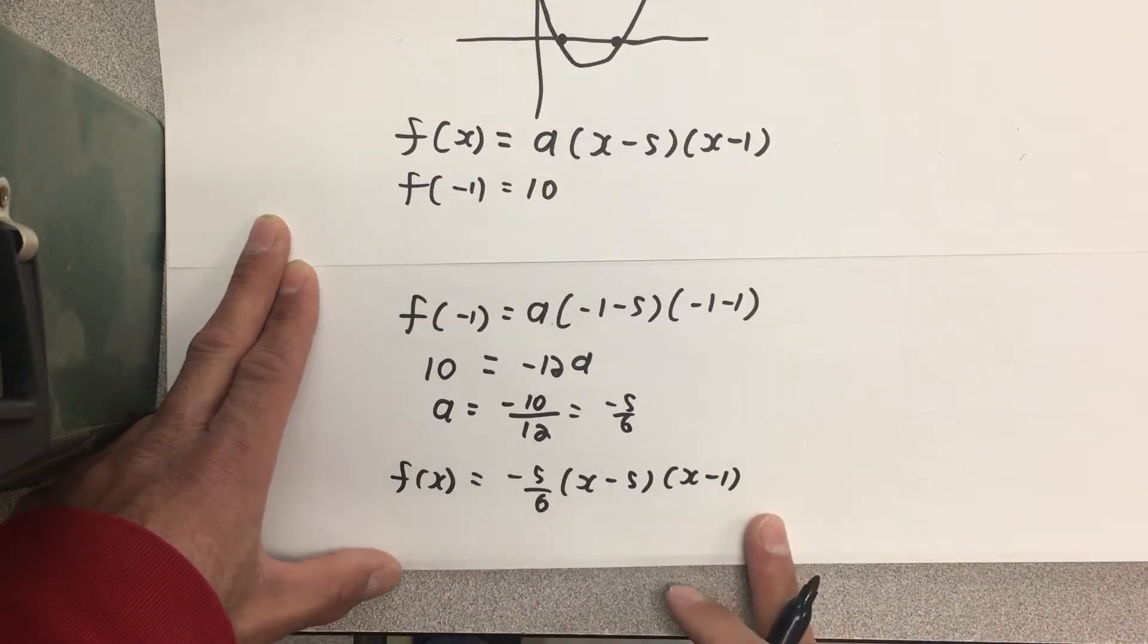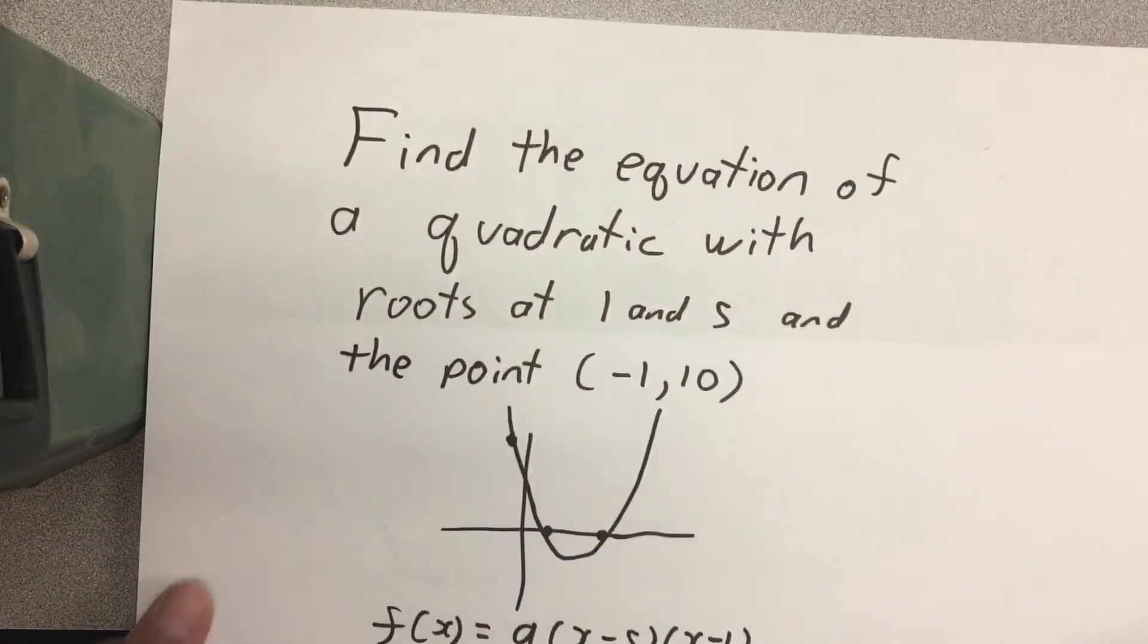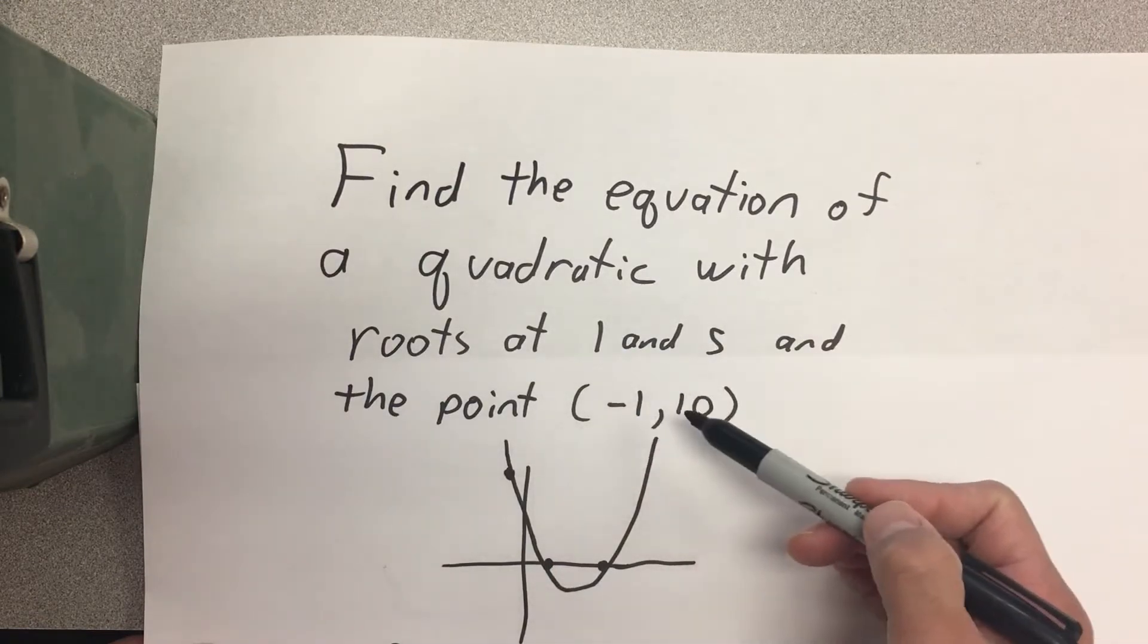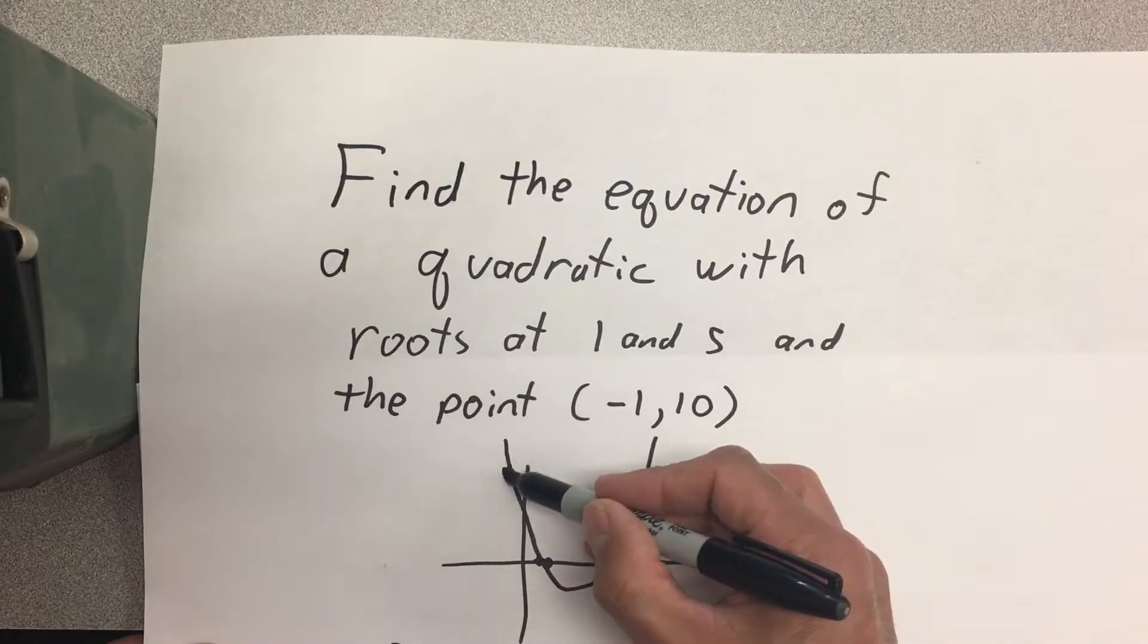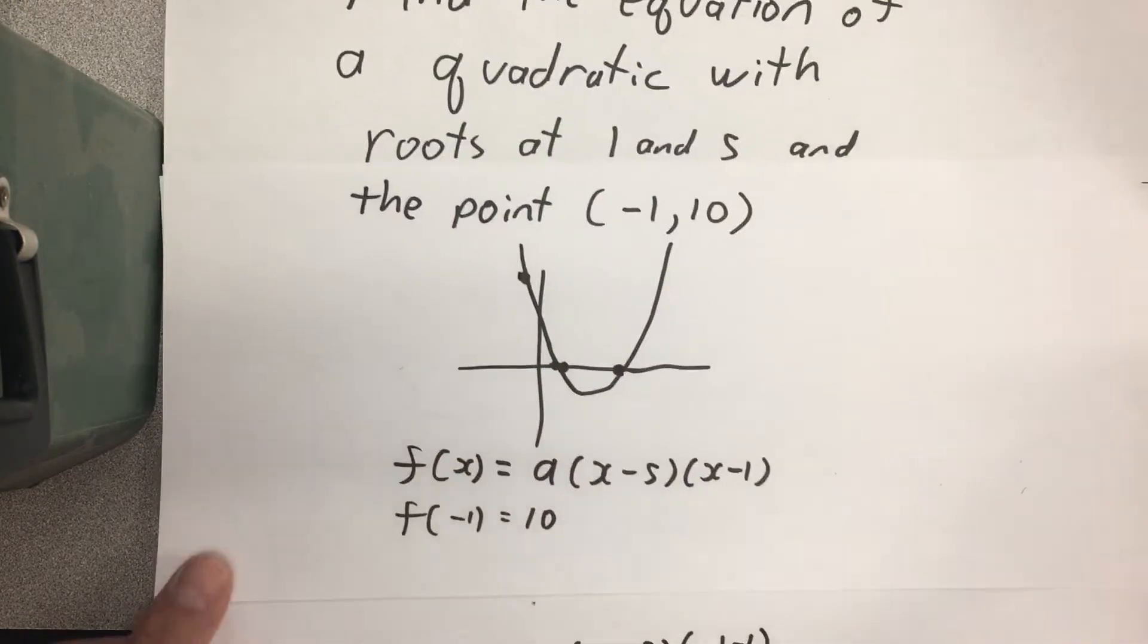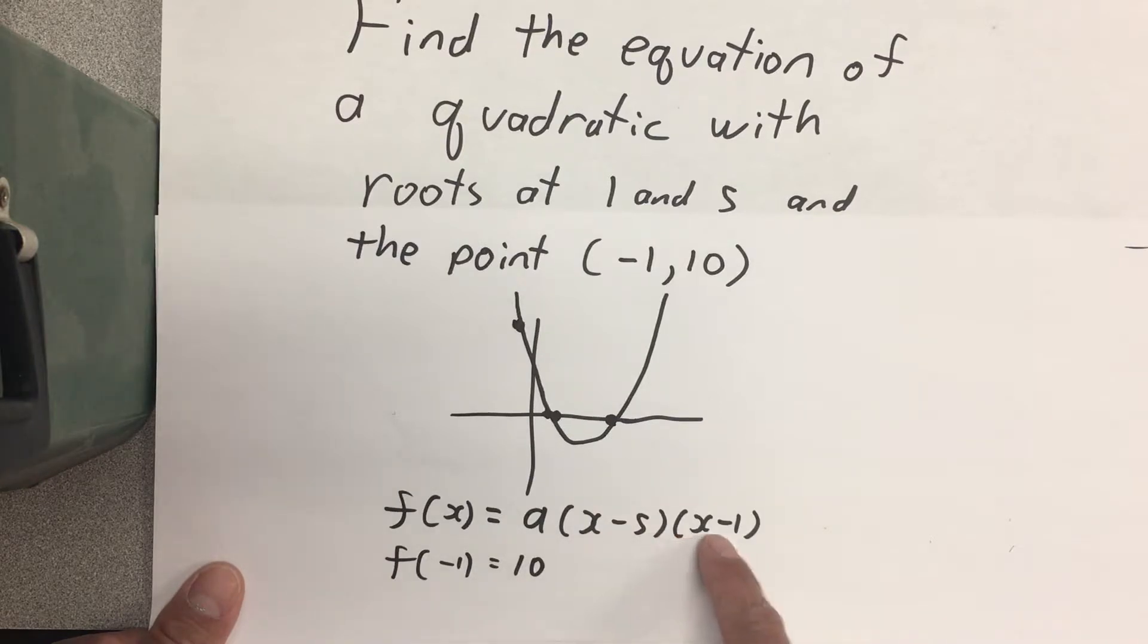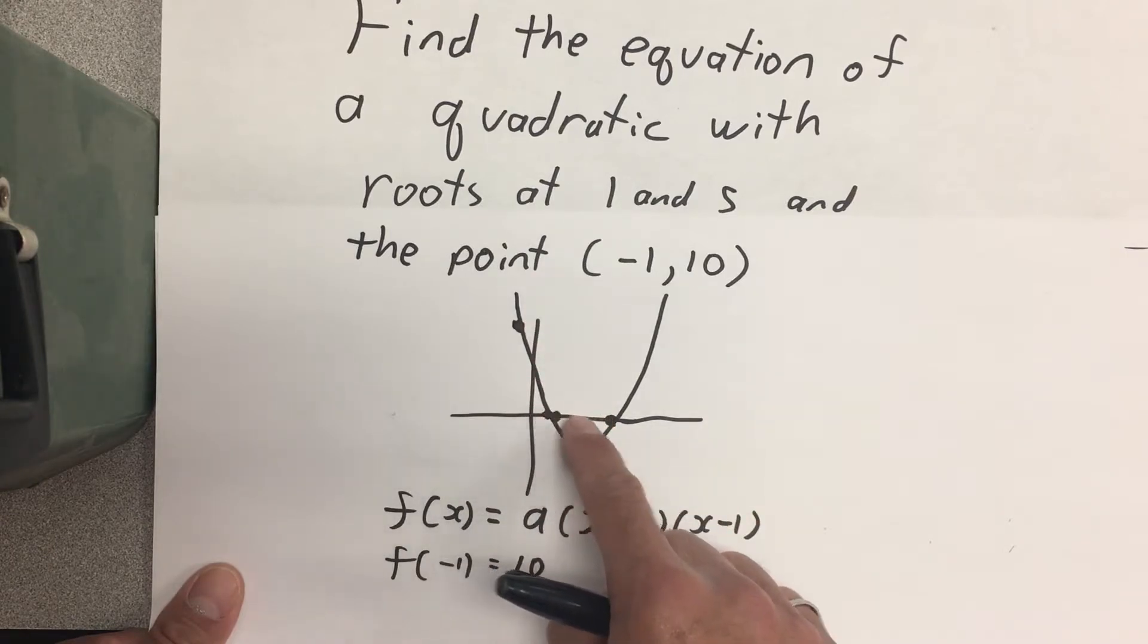Before we expand that out and simplify it to put it in standard form, I just want to recap exactly what we've done. We're finding an equation of a quadratic with roots at 1 and 5 and this point. I'm writing down the equation in this form. This indicates a root at 5 and this indicates a root at 1, because if x equals 5, we have 5 minus 5 is 0, making the whole thing 0, bringing the y value to 0, putting us on the x-axis here.